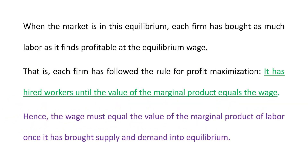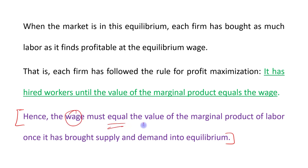The wage must equal VMPL once it has brought supply and demand into equilibrium. The main content here is: when the labor market is in equilibrium, at that point the wage must equal the value of marginal product of labor.